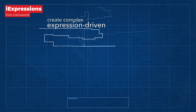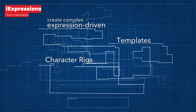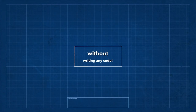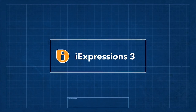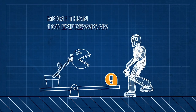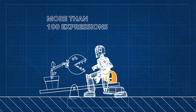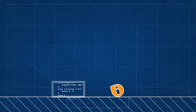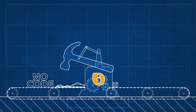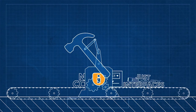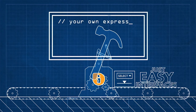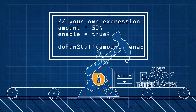If you love the power of expressions in Adobe After Effects but you don't know how to write the code and hate the idea of modifying or customizing that code, then iExpressions is for you. It allows you to create complex expression-driven templates, character rigs, shape animations, and much more without having to write any code. It comes with over 100 iExpressions, each with an intuitive, easy-to-use interface. Projects you work on with iExpressions will still work on machines where iExpressions is not even installed, as well as in Premiere Pro MoGrt templates that you create.